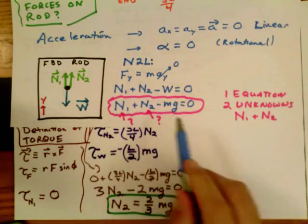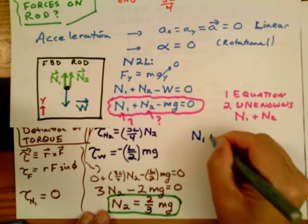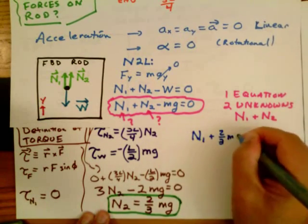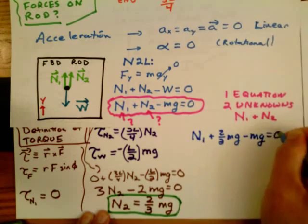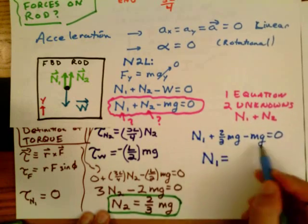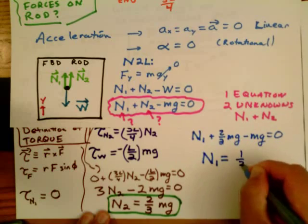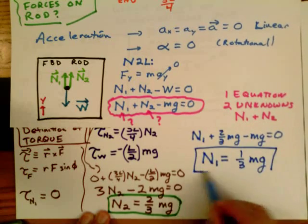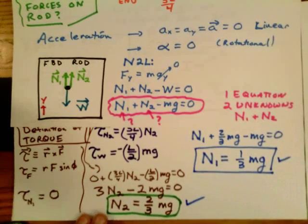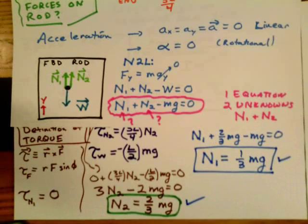And now of course we use our original equation where we applied Newton's second law. So that told us that N1 plus two-thirds mg, that's N2, minus the weight mg. So that lets us calculate N1, which is now one-third of the mass. So the total normal force compensates the weight. We have calculated the two values.